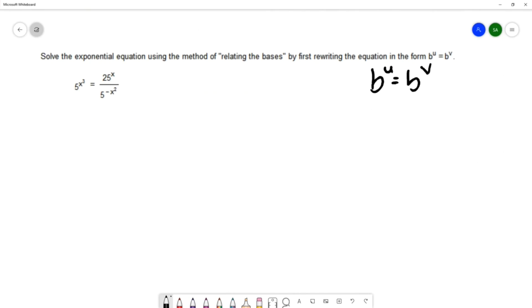The relating the bases method says that once the bases are the same, the exponents must be equal to each other. So we're going to be able to simplify the equation to be u equals v.